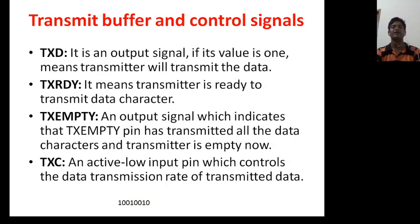Next, transmit buffer and control signal. TxD, when its value is one, it means transmitter will transmit the data. Now transmitter is ready to transmit the data. TxRDY, when its value is one, it means transmitter is ready to transmit data.